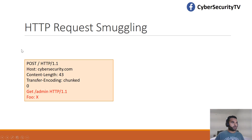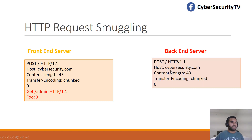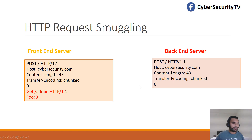Here is our request — there is a front end server receiving the request. There is a Content-Length header and a Transfer-Encoding header. We'll see in the next few slides what the difference is. When the request comes to the back end server, depending on these headers — Content-Length and Transfer-Encoding — how you interpret the request might seem different at the front end versus the back end.